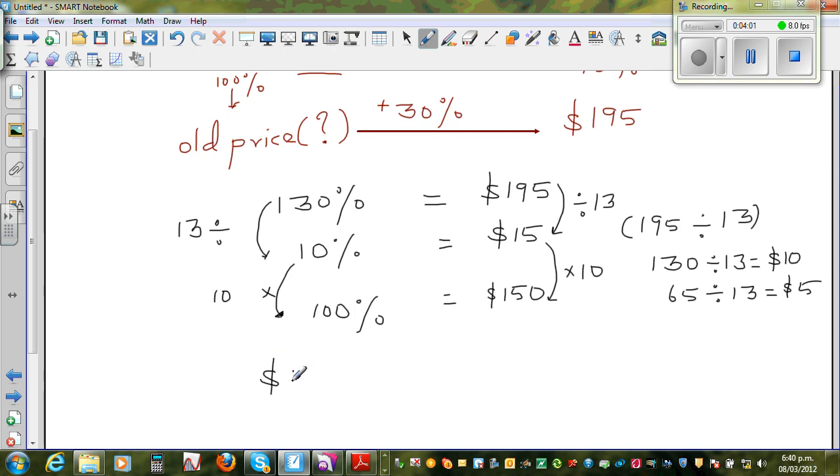So let's confirm whether the answer is right. I want to add 30% to this. We know 10% of $150 is $15. 10% is simply dividing by 10.